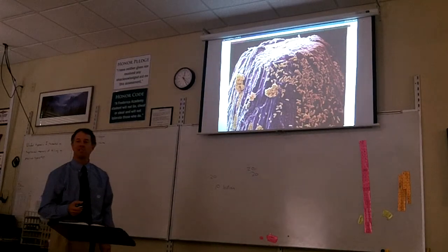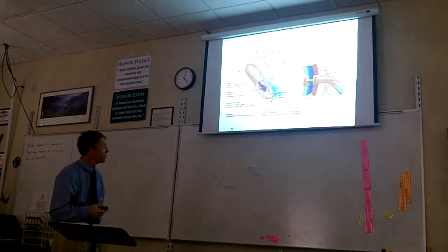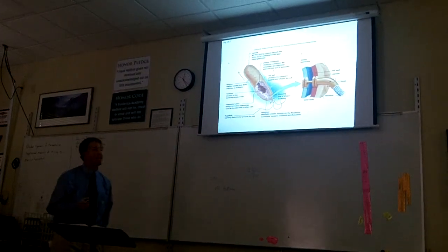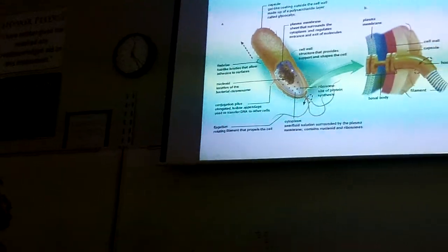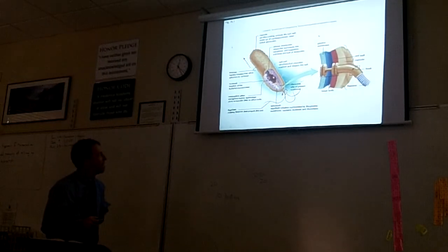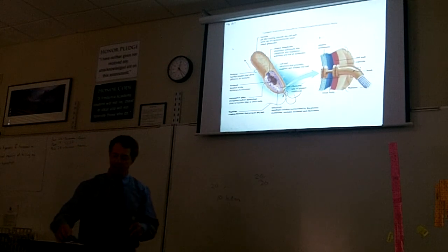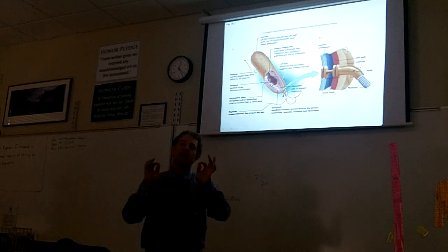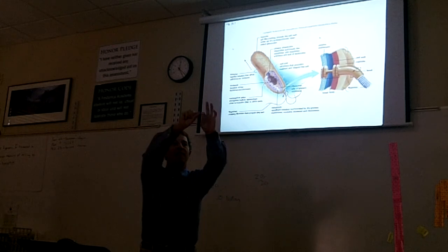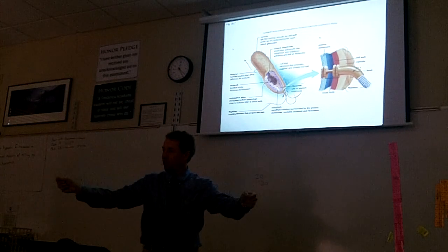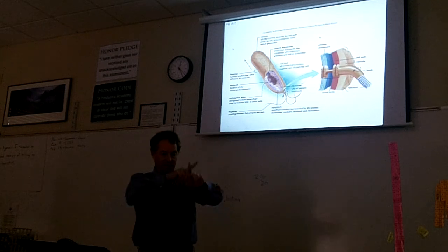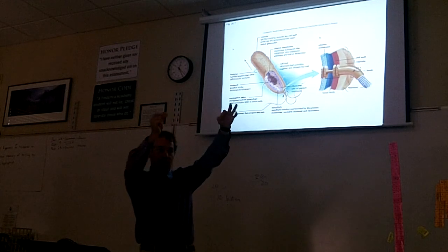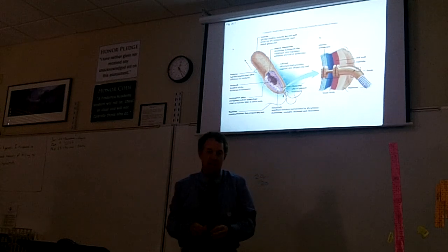So bacteria, these small little critters, they're pretty simple cells. We call them prokaryotic, which means 'before a nucleus.' They don't have a nucleus — they don't have a membrane around their DNA. One thing you need to know about them: they have a singular loop chromosome. Their chromosomes are in a loop. Our chromosomes are straight, and when they're copied they're shaped like an X. But bacterial chromosomes are in a loop.